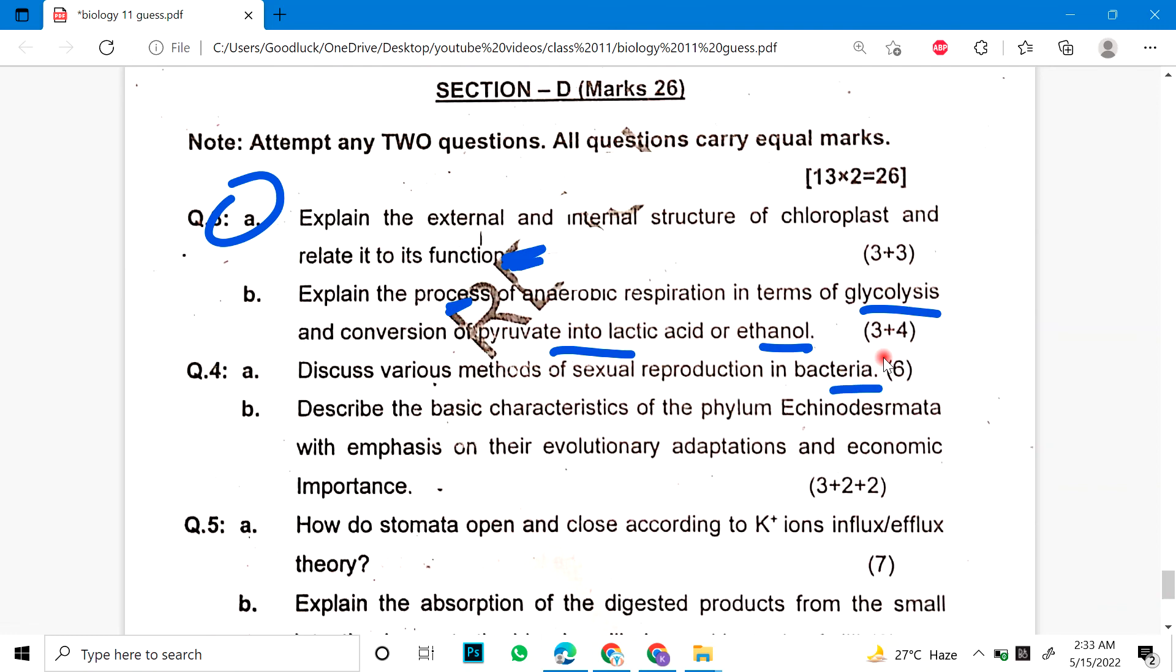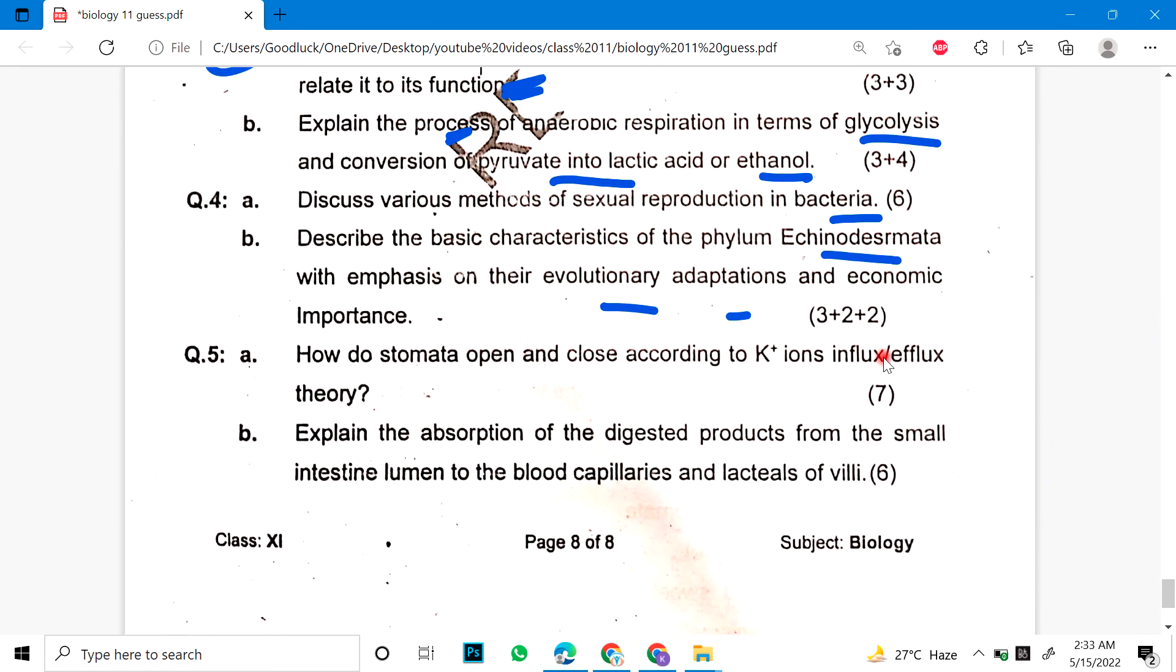Question number 4: Describe various methods of sexual reproduction in bacteria. Describe the basic characteristics of phylum Echinodermata with emphasis on their evolutionary adaptation and economic importance. Question 5: How do stomata open and close according to K plus ion influx efflux theory? Or B: Explain the absorption of the digestive products from the small intestine lumen to the blood capillaries and lacteals.